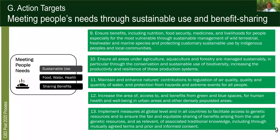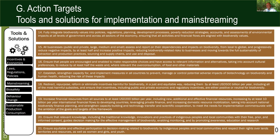Turning now to the area around supporting activities — lots of very important targets there. Target 14 is about how we factor biodiversity into decision-making: government regulations, planning, use of environmental assessment, and national accounts — how do we account for the wealth that we have or are losing in terms of biodiversity, and ensuring that all activities including financial flows, and we're talking about private sector finance, are factoring that in.